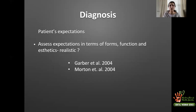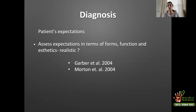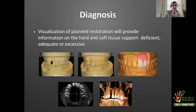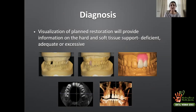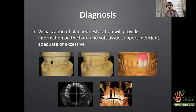Once these evaluations are complete, we move to working with casts, wax, and diagnostic tooth setups. Just like an architect visualizes a building before laying the foundation, we need to visualize the superstructure before placing the implant. Patients come to you wanting to replace a tooth, not get an implant — so we start from the tooth and work backwards. The diagnostic wax-up provides critical information for treatment planning.